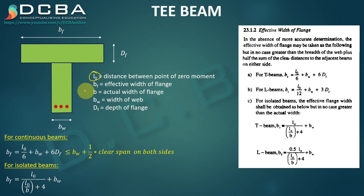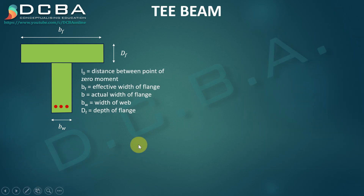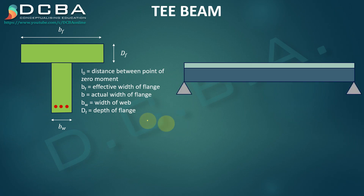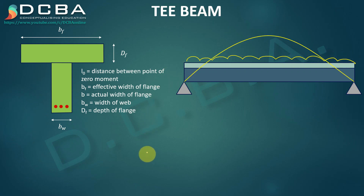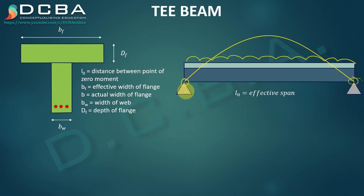We will understand what L0 means and what 'bw plus half of clear span on both sides' means. Taking a simply supported beam example: L0 is the distance between points of zero moment. If I load this beam with a UDL, the bending moment diagram is a parabola, and the points of zero moment are at the two ends. So L0 is simply the effective span of the simply supported beam.